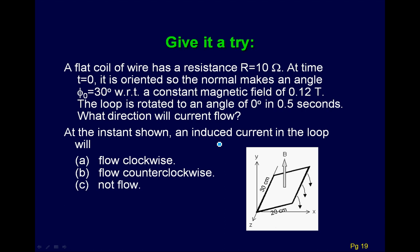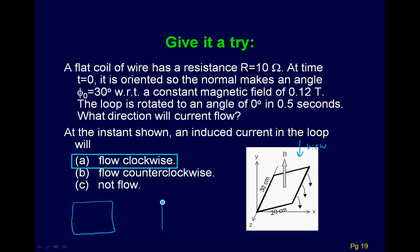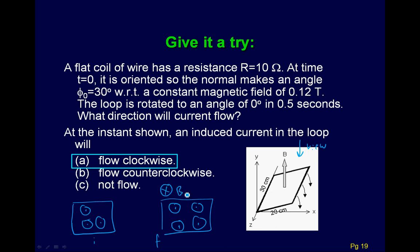Finally, what direction does the current flow? Looking down the y-axis: the B field is pointing out at us. Initially, say three B field lines come out; when the coil gets flat, more B field pierces through — so there are more lines pointing out. The induced B field must go into the page to cancel the increase. With the thumb into the page, the current flows in a clockwise direction. It's always opposing the change in flux.